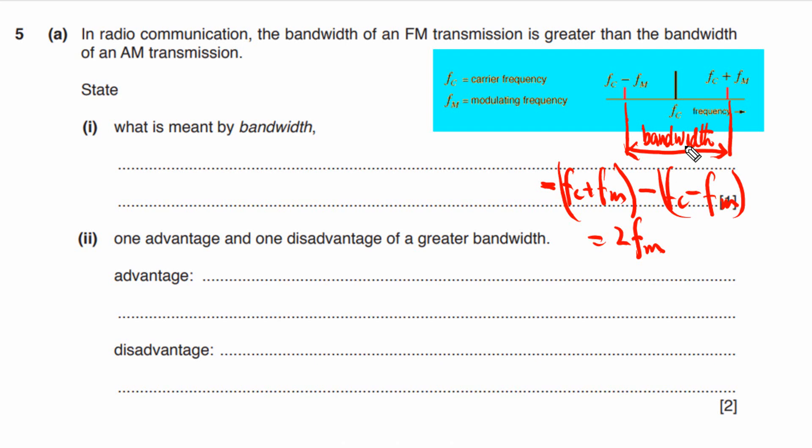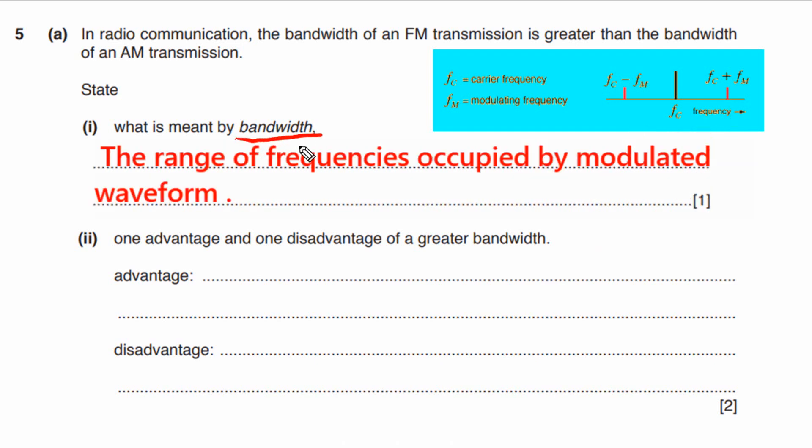Sometimes bandwidth is called the bandwidth of a station, which is the same concept. Bandwidth of a station means that one station can only operate within that range and no other station can operate there. If another station uses the same bandwidth there will be interference, which is not good.